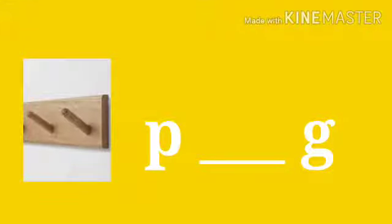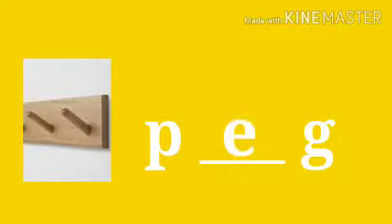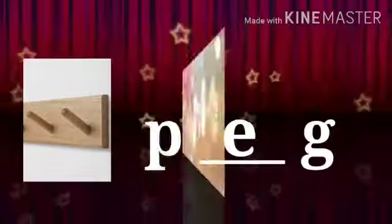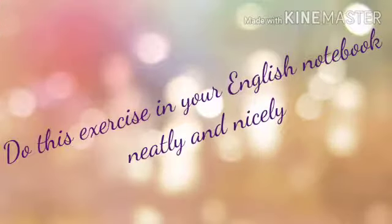Now children, see what picture is this? This is peg. P-G. What letter is missing over here? Yes, E. P-E-G. Peg.